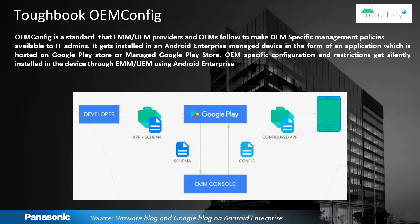OEM-specific configuration and restrictions get silently installed in the device through EMM or MDM using Android enterprise. The diagram shown here gives an overview of the process with the main components. The OEM config app made by Panasonic is called Toughbook OEM config, and it is part of our Productivity Plus software platform.